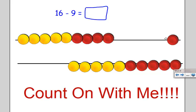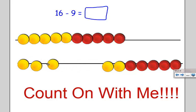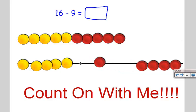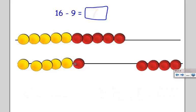Count on with me. One, two, three, four, five, six, seven. So now I see I have 16 on my rekenrek, and I only moved seven, so that's the difference.